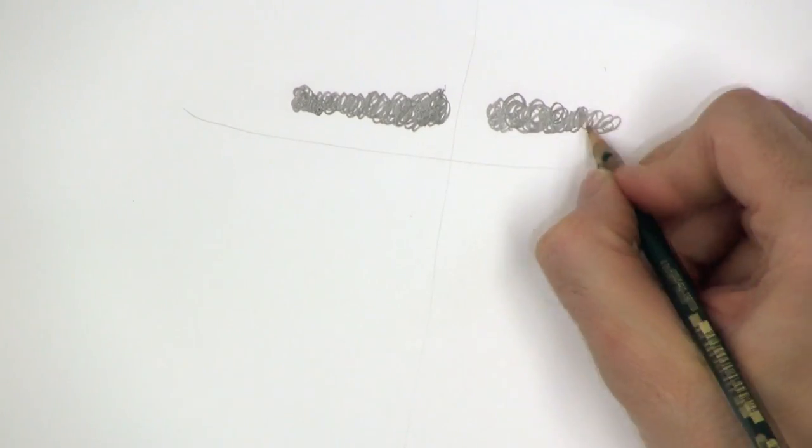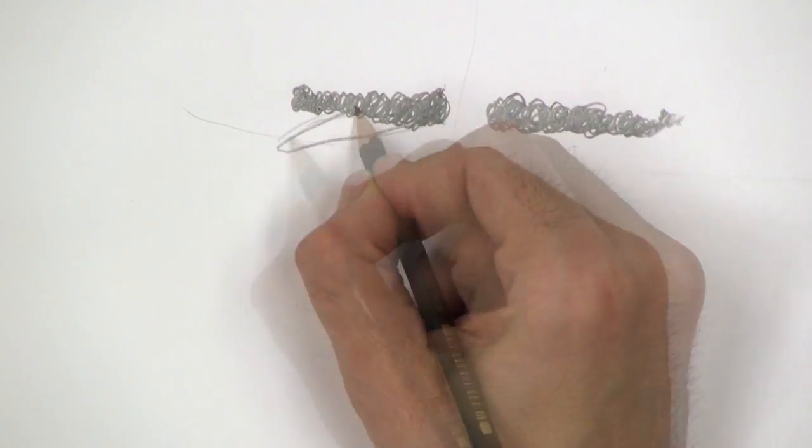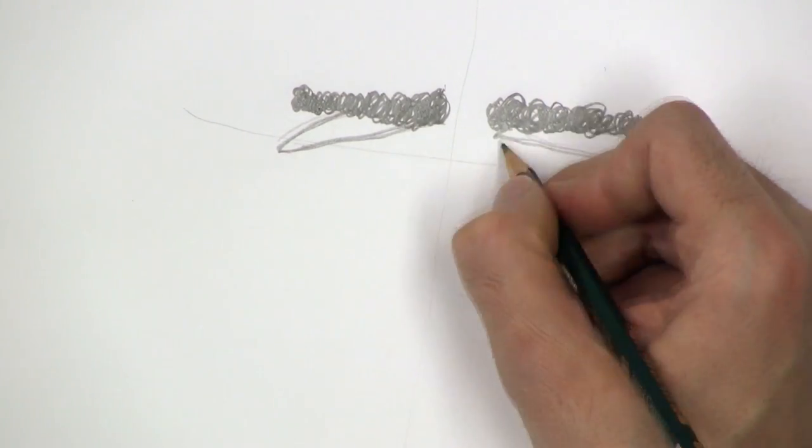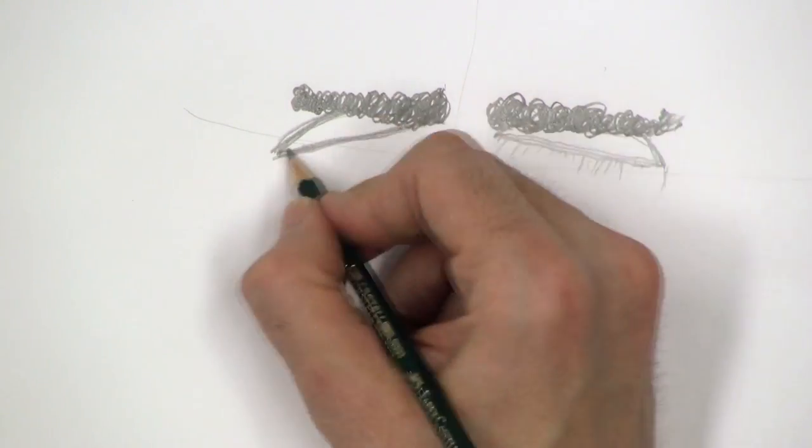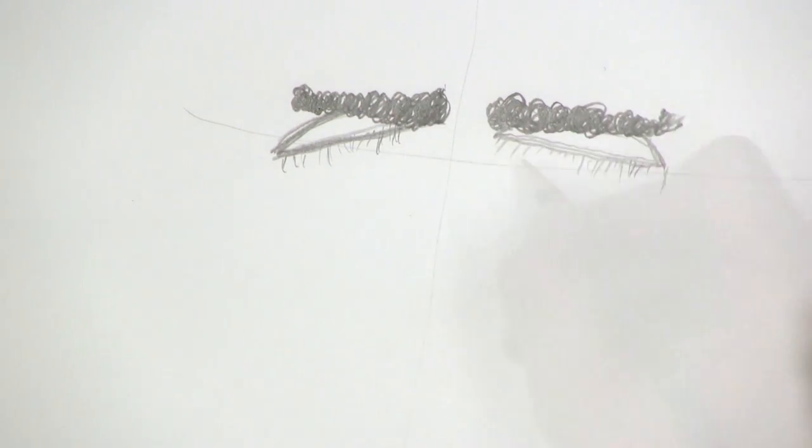Carefully do the eyebrows and then the upper eyelids. This should be slightly slanted and somehow with an almond shape. Beautiful!